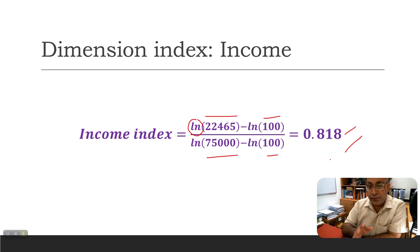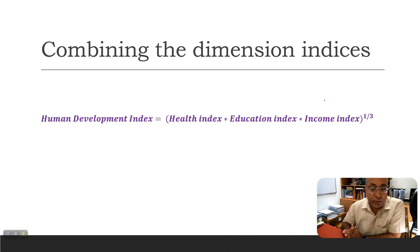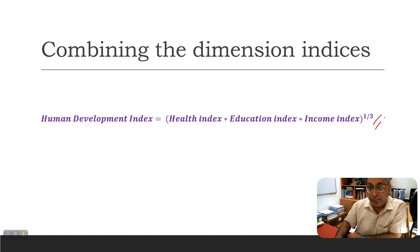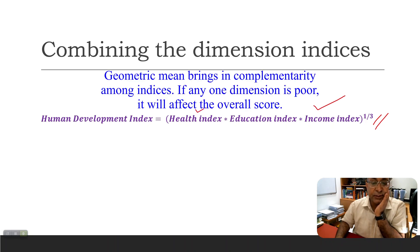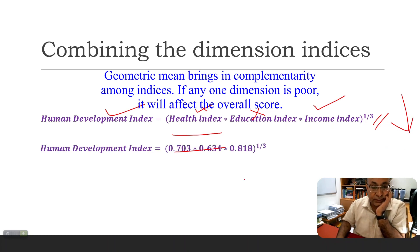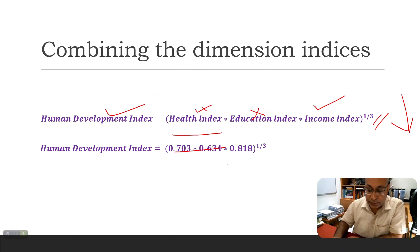Now we combine the dimension indices to get the Human Development Index. Here there is a very major change: earlier it was a simple arithmetic mean — add all three and divide by three. Now it is a geometric mean. Earlier there was perfect substitutability between health, education, and income, so a country doing phenomenally at income could offset a weakness elsewhere. Now, if any one index is very low, it drives the entire value down. We multiply all three indices together and raise to the power of one-third to get the geometric mean.